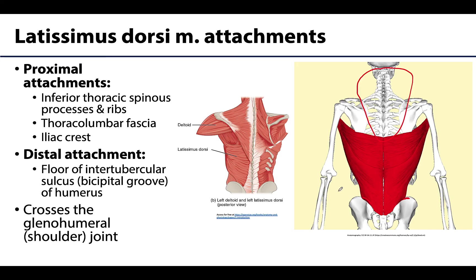Another important proximal attachment is the thoracolumbar fascia, which is visible on this illustration. The thoracolumbar fascia is going to be quite a dominant structure on the inferior back, and if you're one of the individuals dissecting, this will be something that is clearly visible. In a superficial view, if you aren't looking at the latissimus dorsi in this inferior region, you are looking at this shiny thoracolumbar fascia, which covers and envelops many of the deep back muscles in this region — a fairly thick, robust structure.